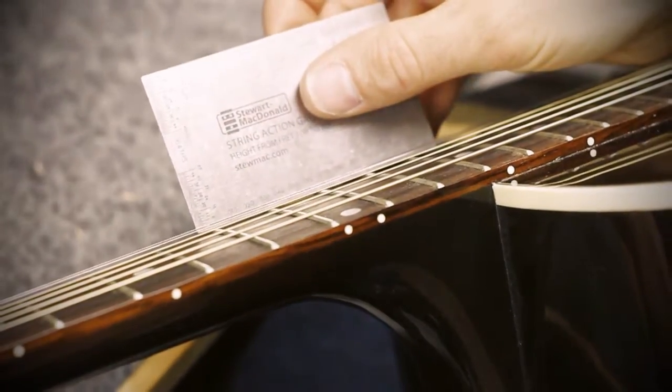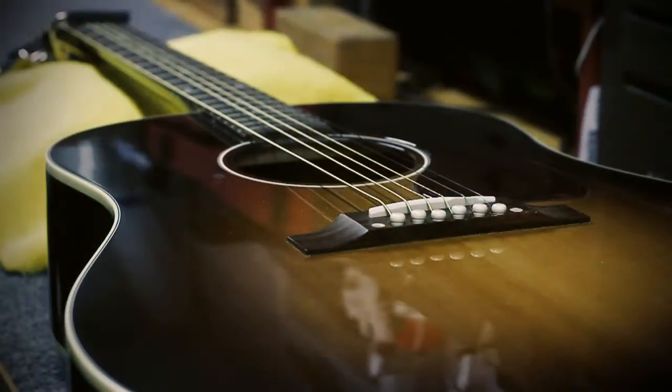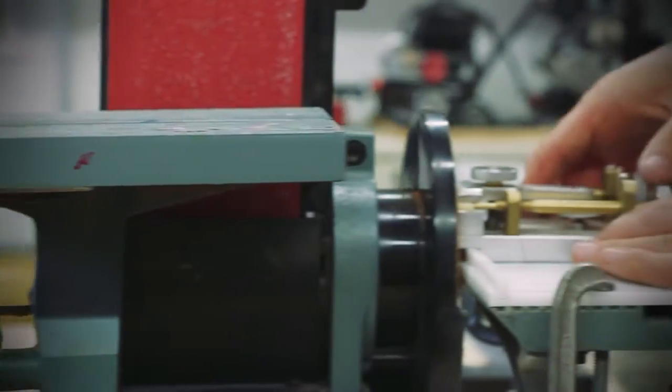Because the 12th fret is approximately half the distance from the nut to the saddle, any change in the action at the 12th fret will require removing twice that amount from the saddle.